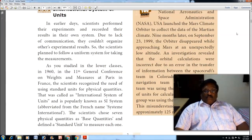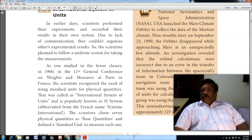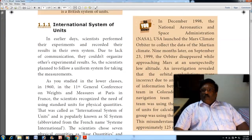This was called the International System of Units and is popularly known as the SI system. The scientists chose seven physical quantities as base quantities and defined a standard unit to measure each one.